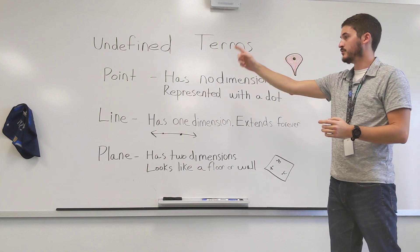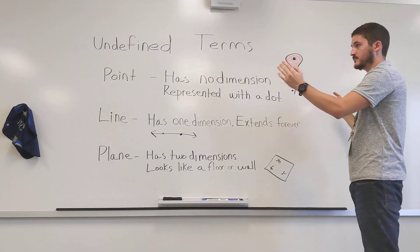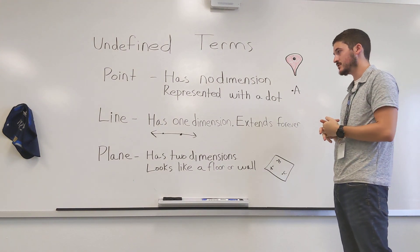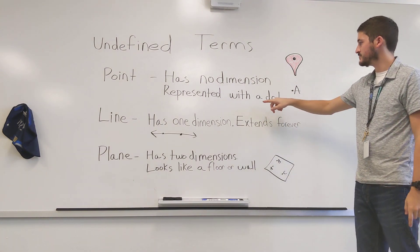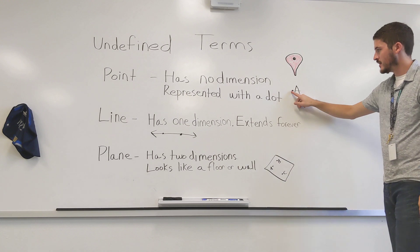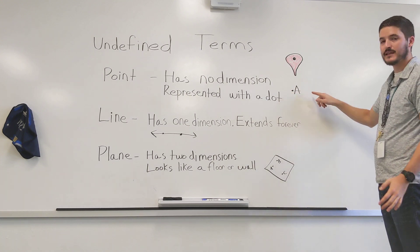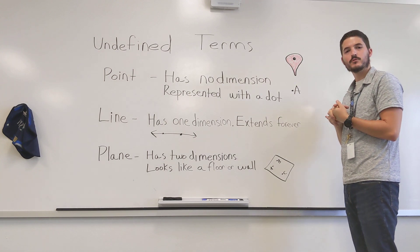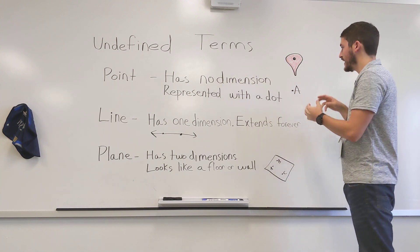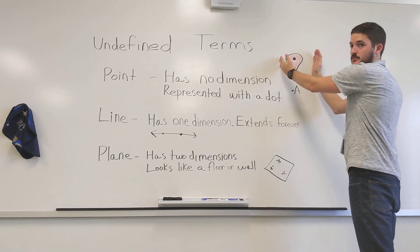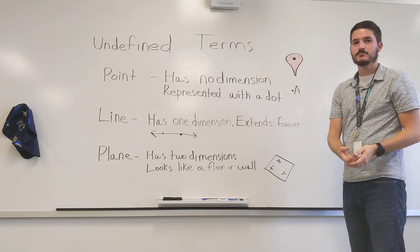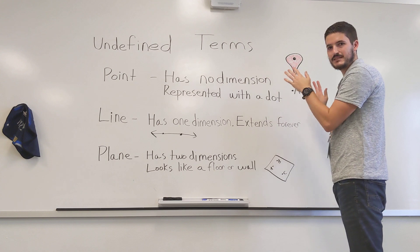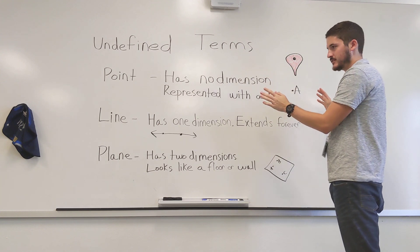We have point, line, and plane. The first thing we start out with is what's called a point. A point has no dimension. We usually represent it with a little point right here with a letter. I like to think about it like the little pushpin on Google Maps. Is that pushpin really there in real life? No, but it's used to kind of mark where we need to be or an important location.